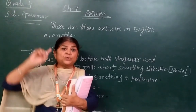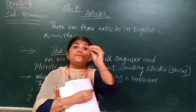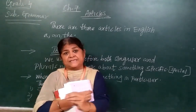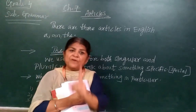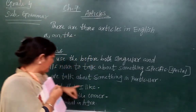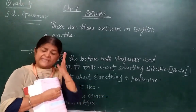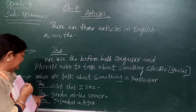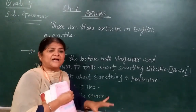You don't write multiple S's — just one S for boys, whether there are two or fifty. Singular means talking about one person; plural means talking about more than one. So our examples: the shirt that I like, the garden at the corner, and the Taj Mahal in Agra.